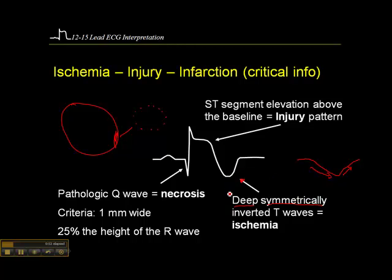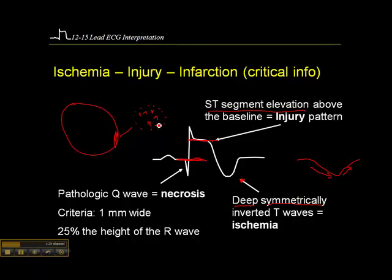We have to see that in two anatomically contiguous leads. In an acute myocardial infarct, you may not necessarily see inverted T waves, but what you typically see is ST segment elevation. Here is the baseline and here is the J point or the ST segment, so it's well above the baseline. Injury is a word that describes cells which are ischemic to the point where they're unable to regulate the flow of electrolytes across the cell membrane like they normally would.